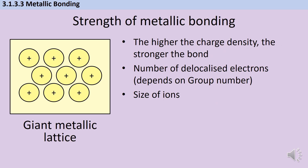At GCSE, we described how this bond formed, and it's exactly the same at A-level. But at A-level, we now need to be able to talk about the strength of that bond. Essentially, the higher the charge density, the stronger the bond will be between those positive cations and those negative delocalised electrons.